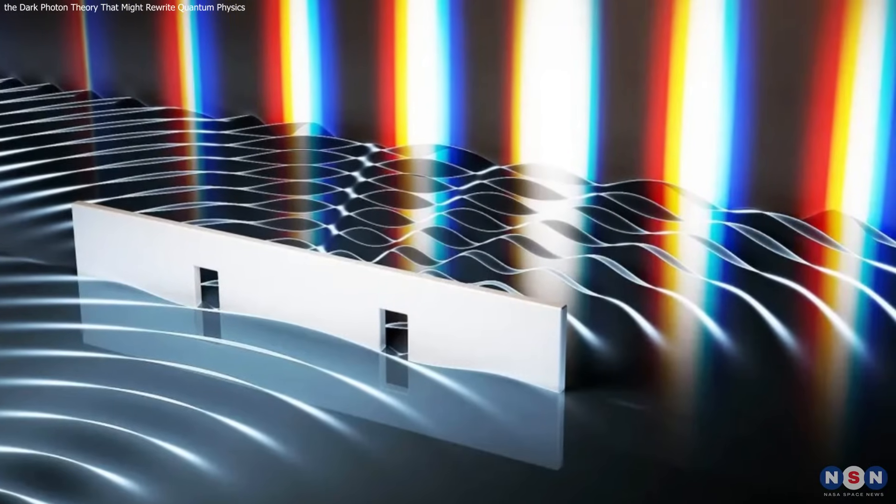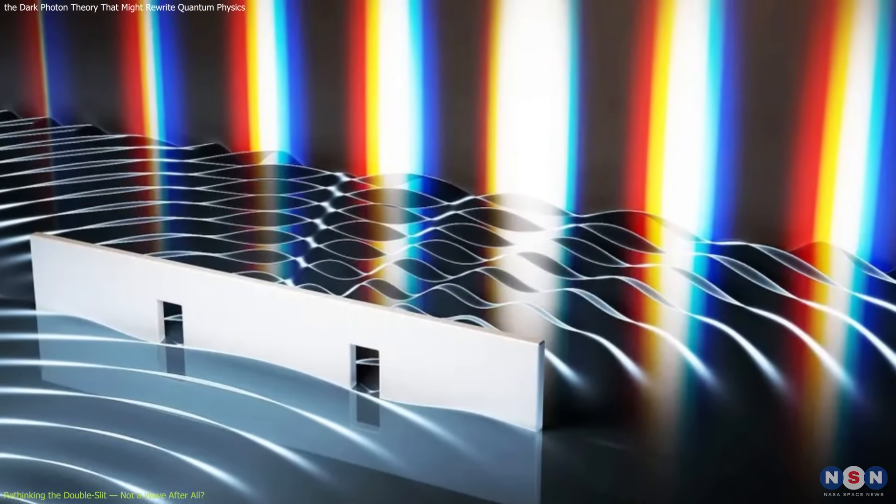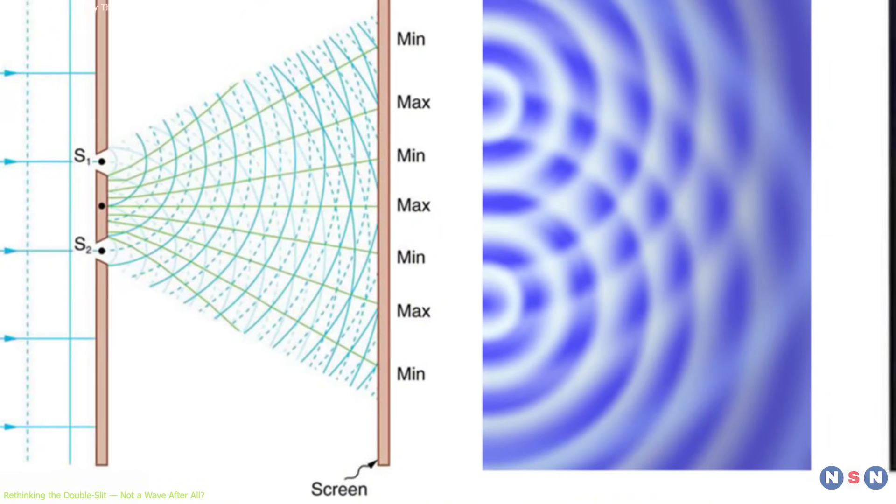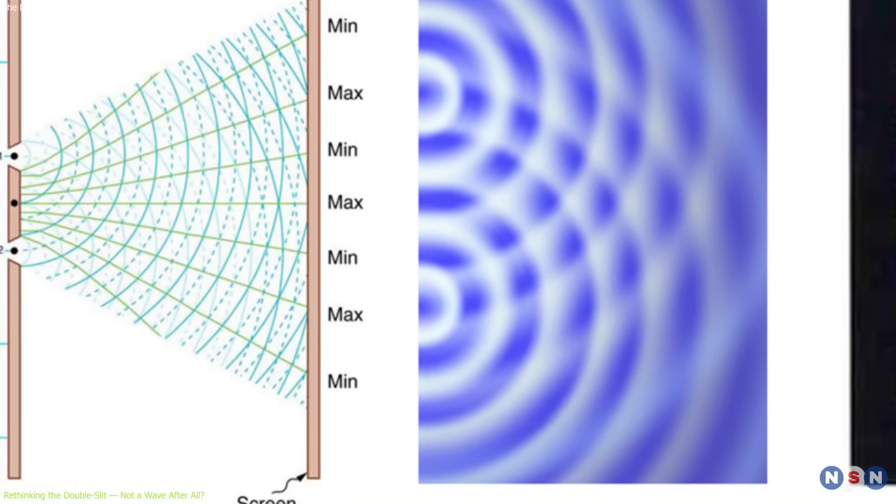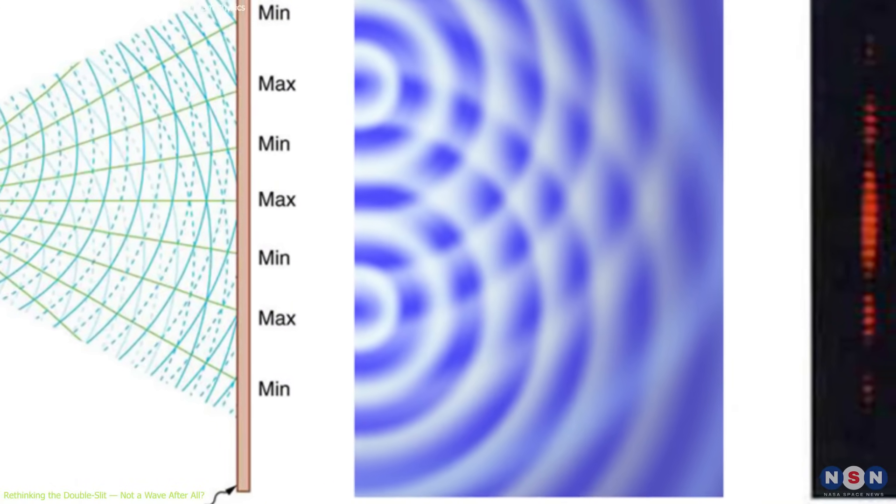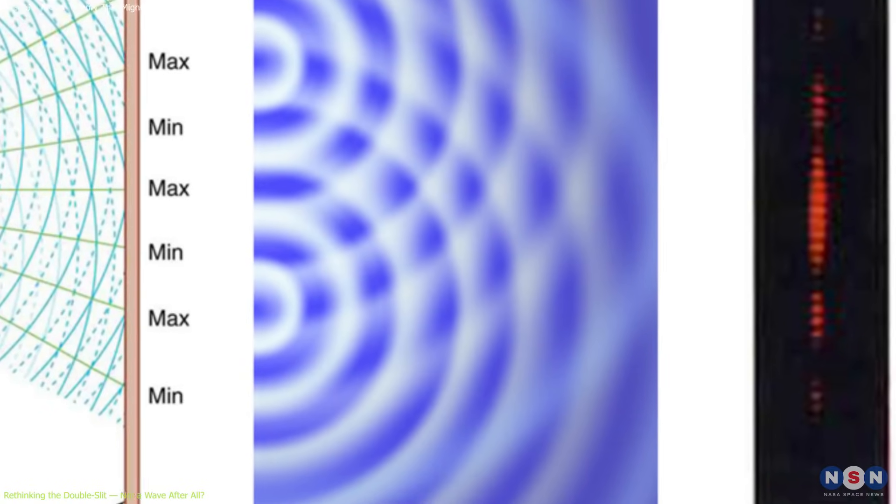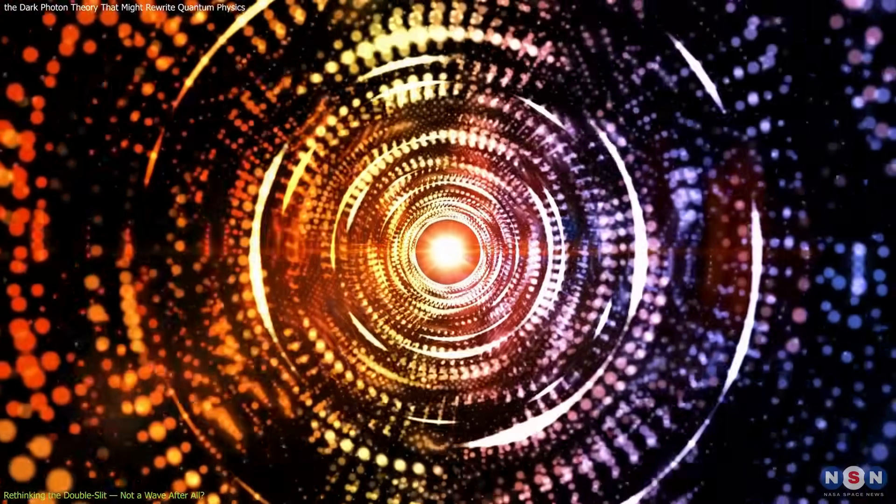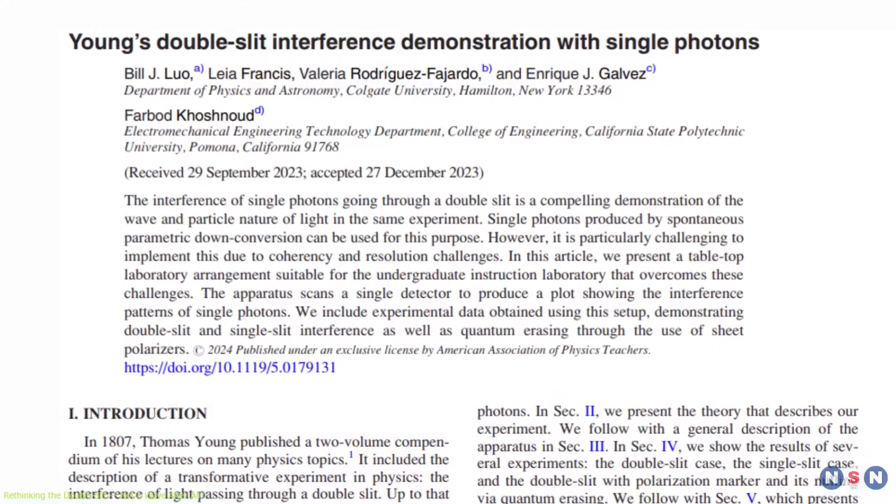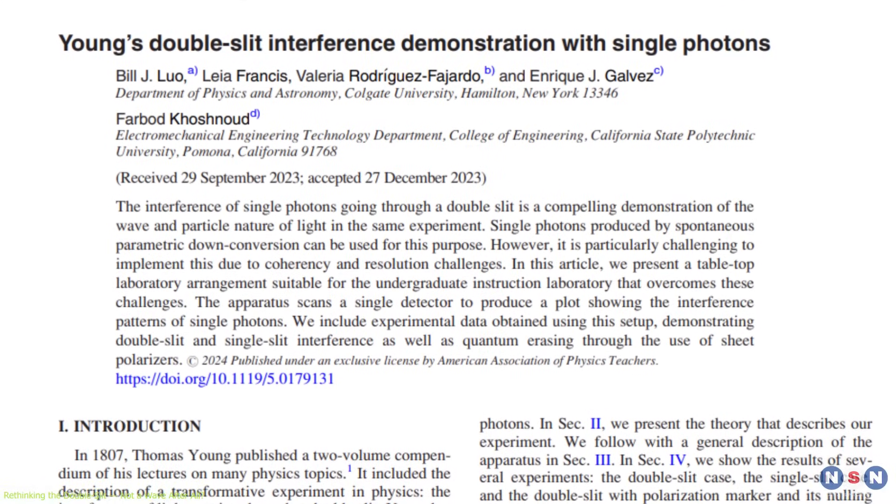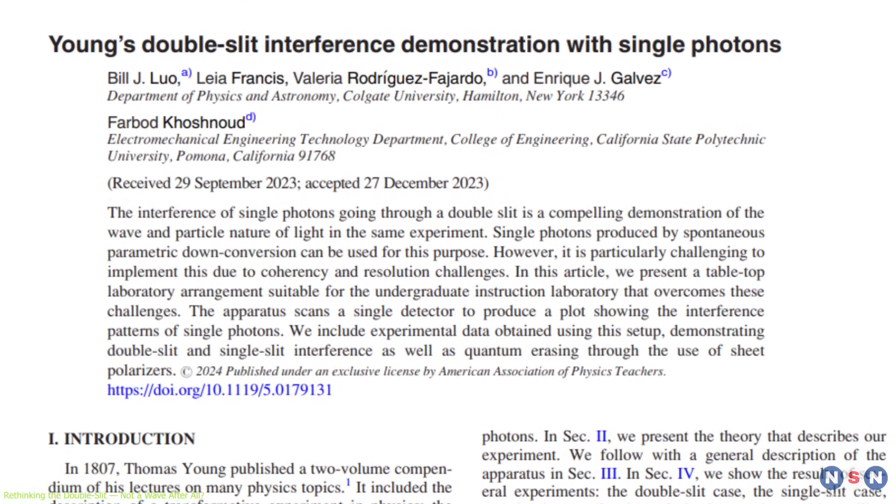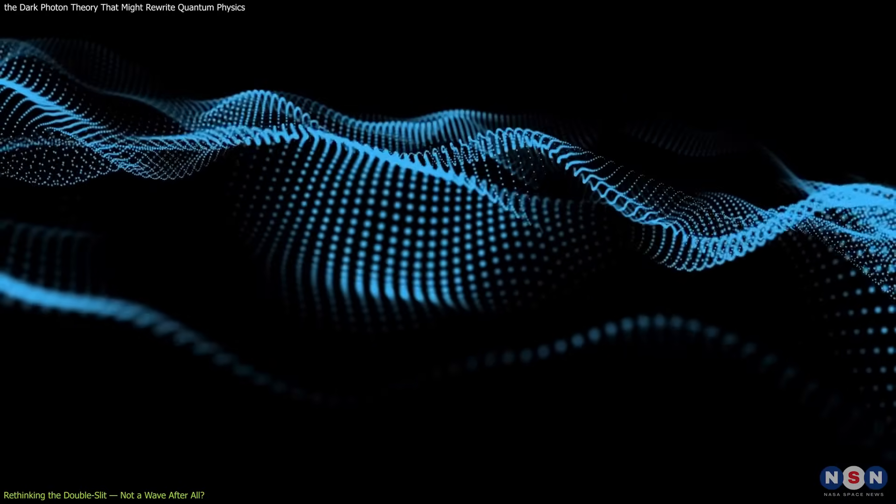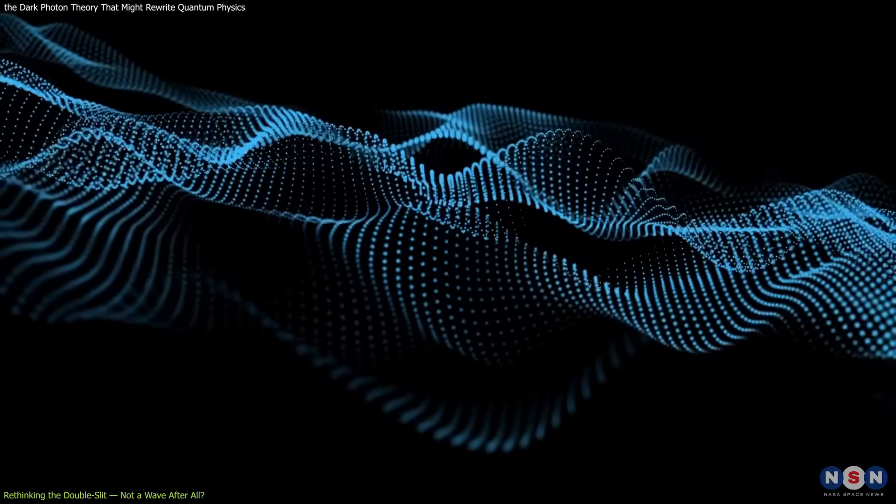For centuries, the double-slit experiment has beautifully illustrated the dual nature of light. When light passes through two narrow slits, it produces alternating bands of brightness on a screen, a telltale sign of interference. A century later, quantum theory added a twist. Even individual particles, like photons, create the same pattern when sent one at a time. It seemed to prove that particles behave like waves, somehow traversing both paths at once until measured.